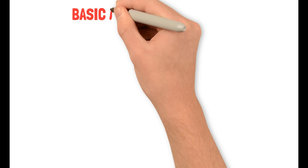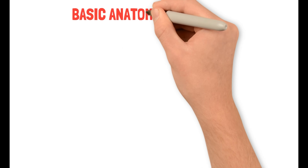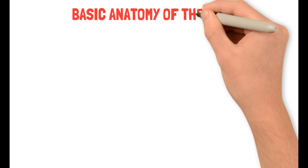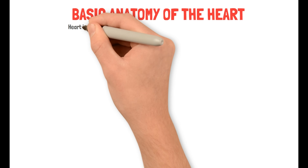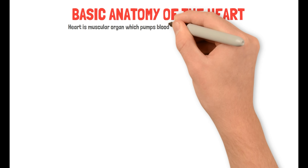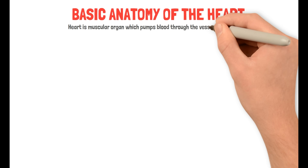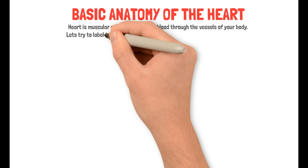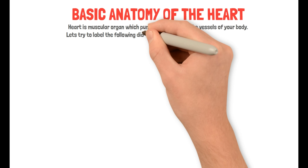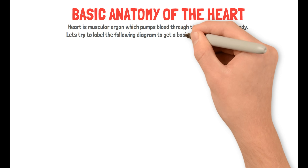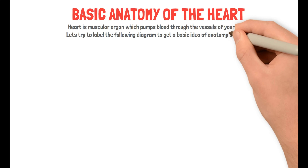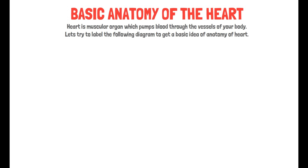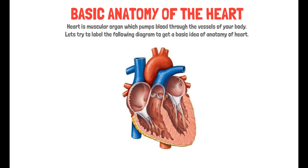Now that we are done with the basic principles, let's talk about the basic anatomy of the heart. The heart is a muscular organ which pumps blood through the vessels of your body. Let's try to label the following diagram to get a basic idea of the anatomy of the heart. Here we have a cross section of a human heart.